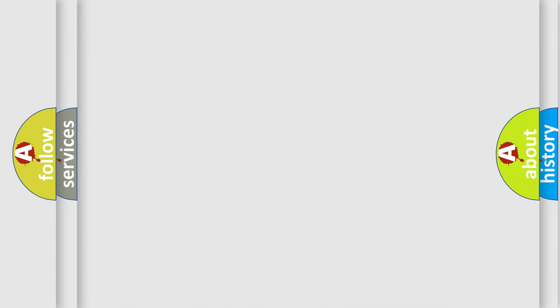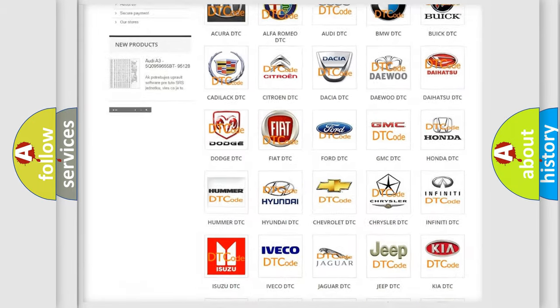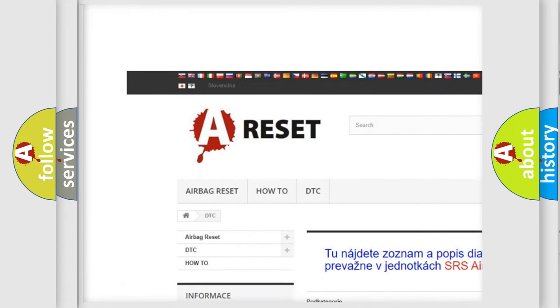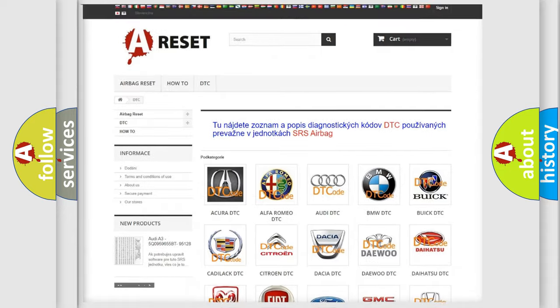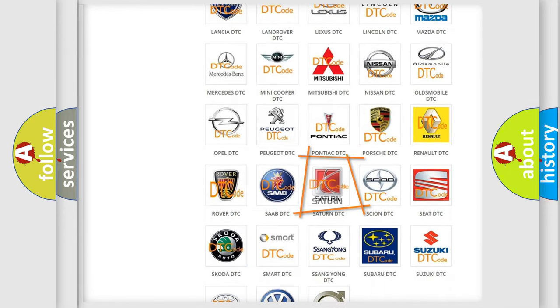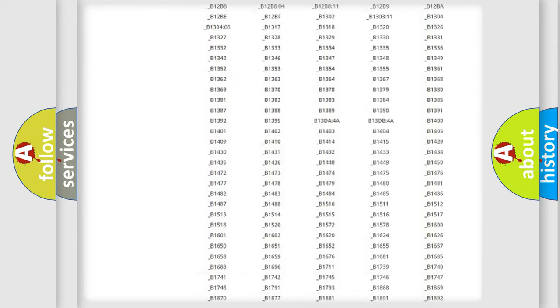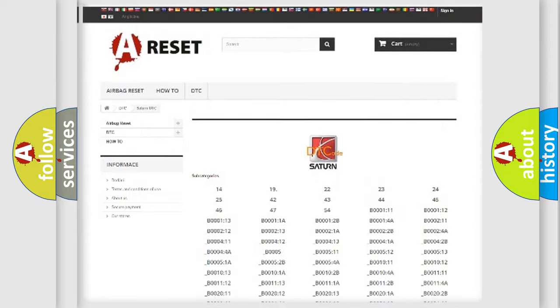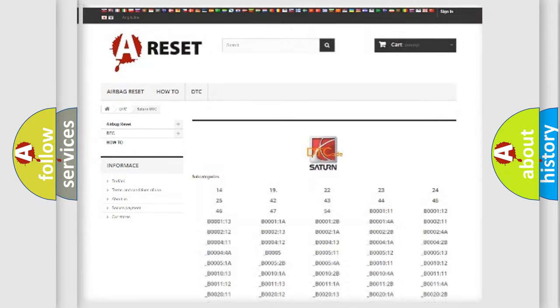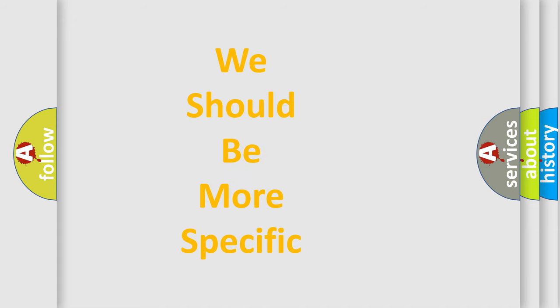Our website airbagreset.sk produces useful videos for you. You do not have to go through the OBD2 protocol anymore to know how to troubleshoot any car breakdown. You will find all the diagnostic codes that can be diagnosed in Saturn vehicles, and many other useful things. The following demonstration will help you look into the world of software for car control units.